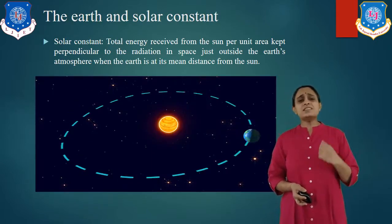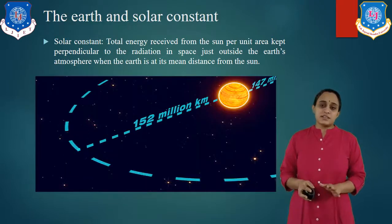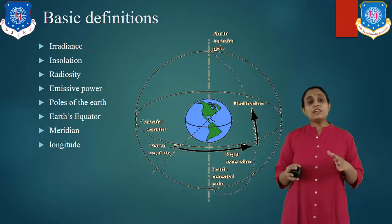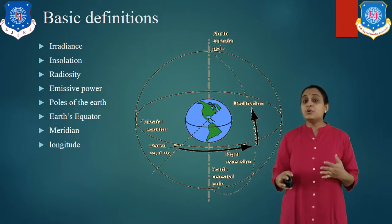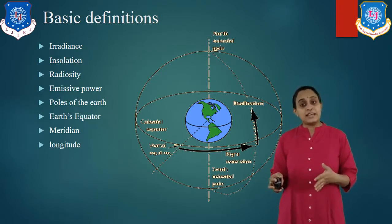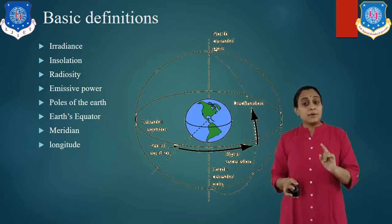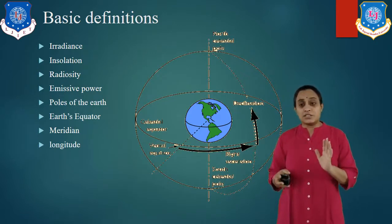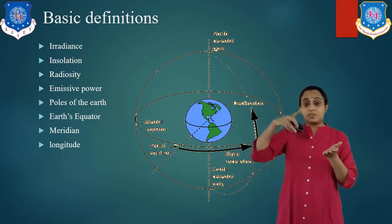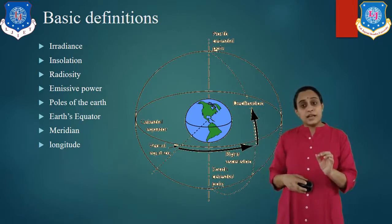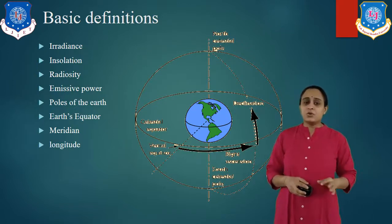Let us start with the basic definitions. First is irradiance. The amount of electromagnetic energy — that is, the radiation incident on the surface of the Earth — per unit time per unit area is known as irradiance.